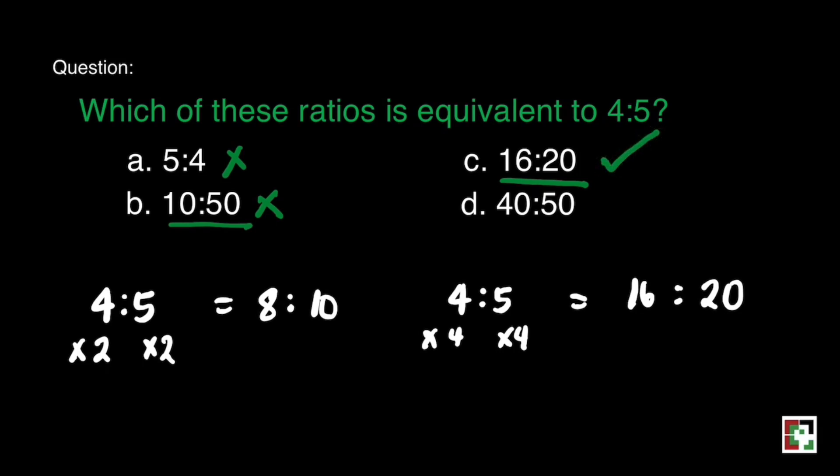That's letter C. But we have to try also letter D. We can multiply 4 is to 5 by 10. 4 times 10 is equal to 40, and 5 times 10 is equal to 50. Oh, that is also a perfect match. It means we have two answers for this question. That's letter C and D.